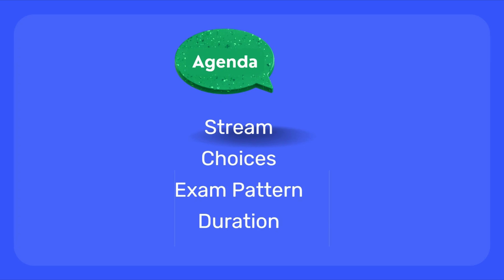After choosing this stream, you may land on one of two options: a two-month training or a six-month training. If you land on the six-month path, you will have to face four MCQs within that duration, after which there is a final viva, which is compulsory for all streams and all trainings in Accenture — that's how they decide whether to keep you or not. For two months, you will only get two MCQs.